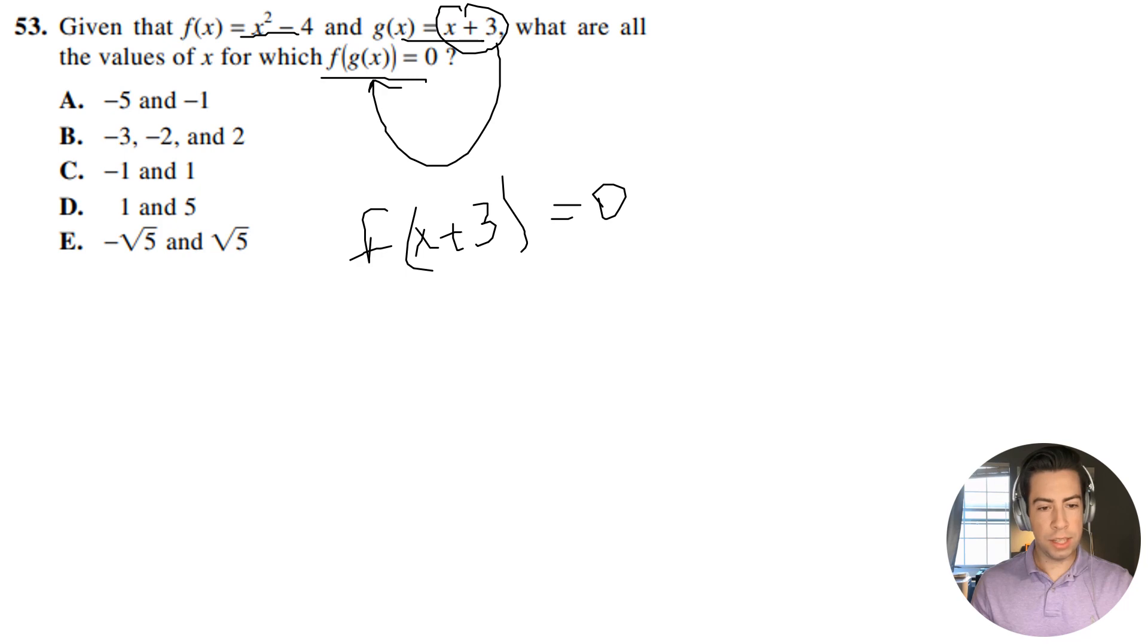Now what I'm going to do is I know that f of x equals x squared minus 4, so I'm going to have that f of x plus 3 equals x plus 3 squared minus 4, and that is going to be equal to 0.